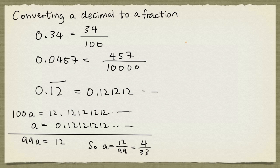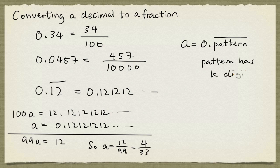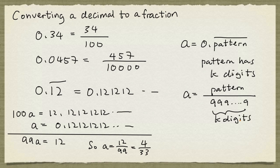In general, if the number a has the pattern 0.something repeated, and say this pattern has k digits, we can use the same method to obtain that a is equal to the digit pattern divided by 999999. So there are k digits.